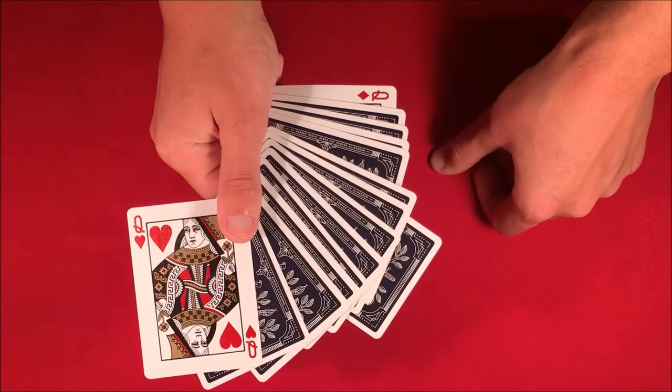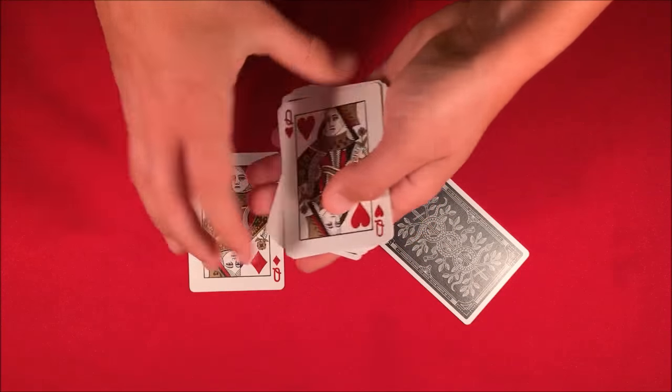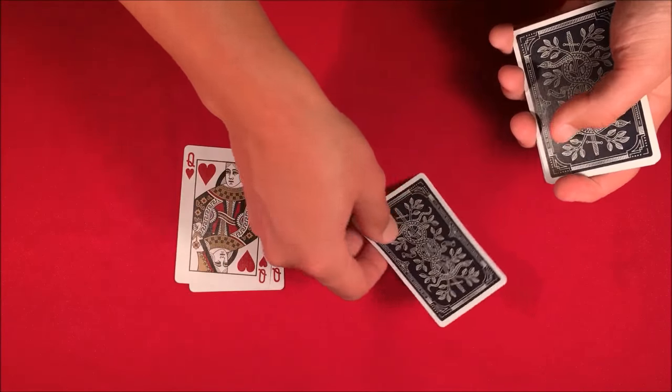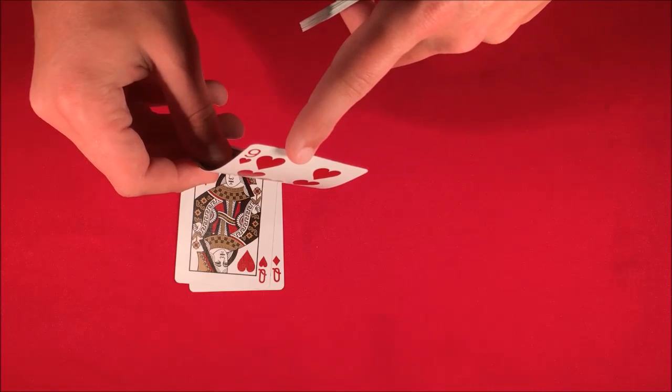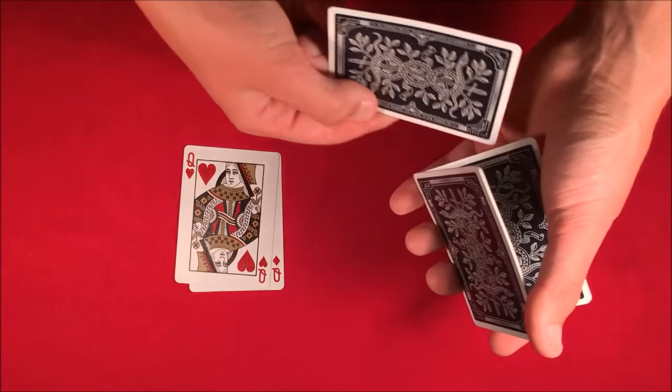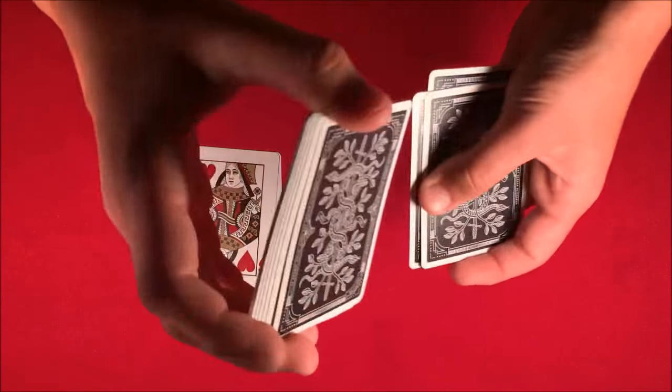You pick a card here - this happens to be in between the two red queens. Let's say you pick this card. I don't want to look at it, but this is your card. All I'm going to do is take your card, put it somewhere in the middle of the deck to get it lost, and shuffle up the packet.